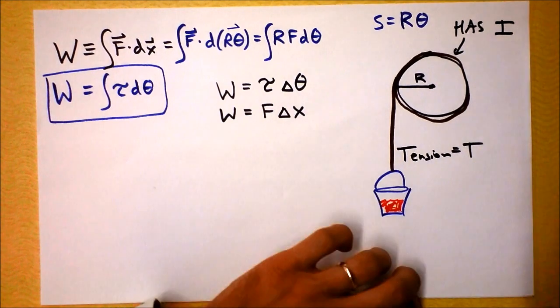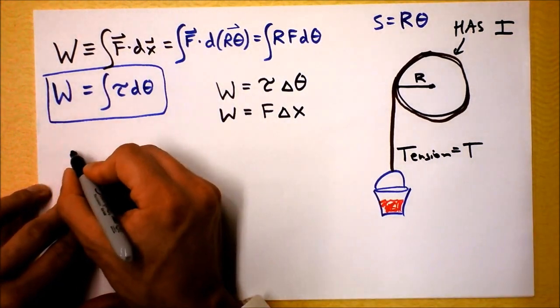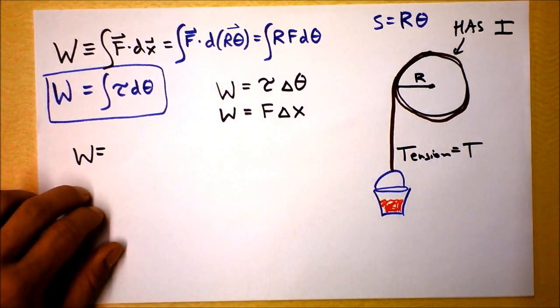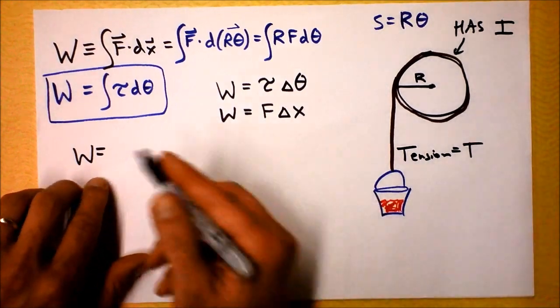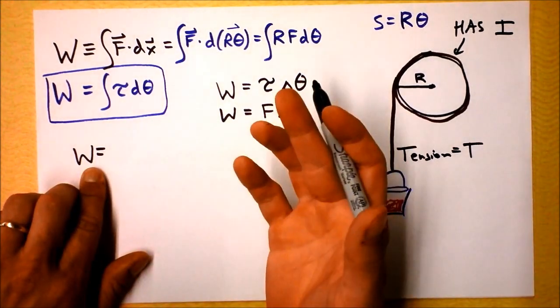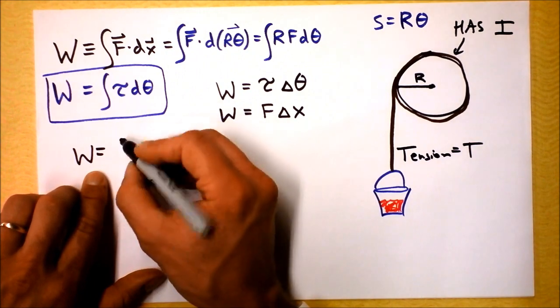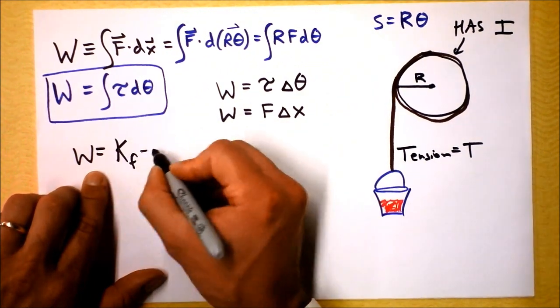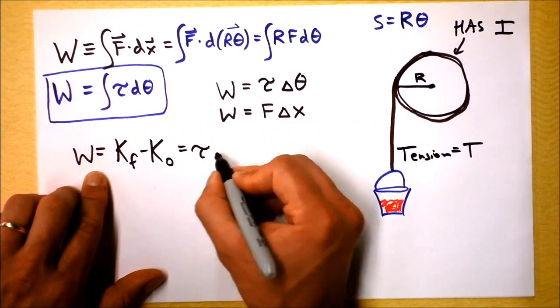I'm gonna say it has a moment of inertia. So we'll write down that work. Wait a second, didn't we say that work is changing kinetic energy previously? It still is. When work is done, kinetic energy is changed. So since work is changing kinetic energy, it's going to be K final minus K naught, and that is equal to torque times delta theta.